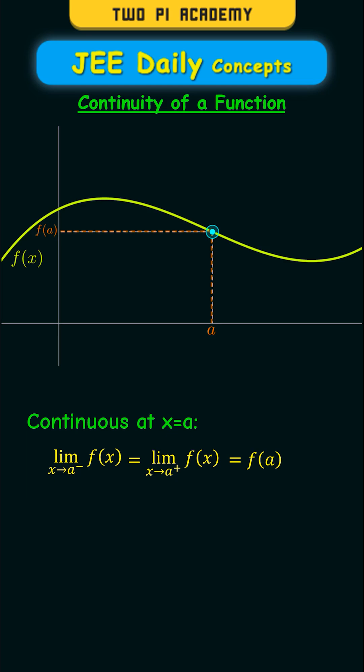And as an example for a non-continuous function you can consider the following function g of x. Here the left hand limit of the function approaches the following point at the top and the right hand limit of the function approaches the following point at the bottom.